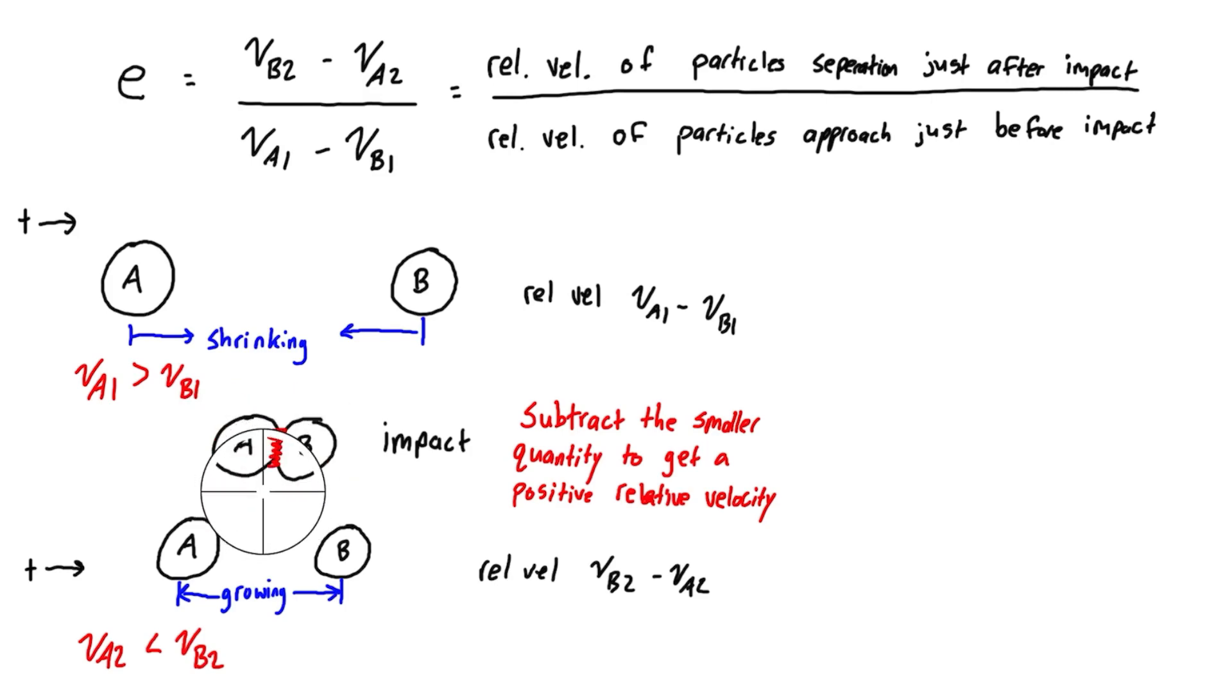Now what's actually happening in real life when two bodies collide like this is when they collide, they actually deform a little bit. During that deformation, it's caused by a force from the impact, and that force is acting over a certain amount of time while it's deforming. That period of time is called the period of deformation.